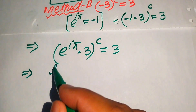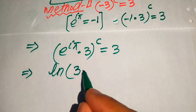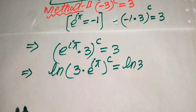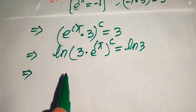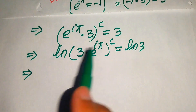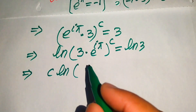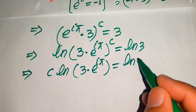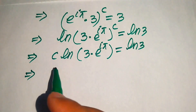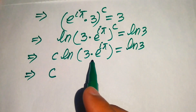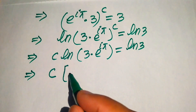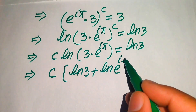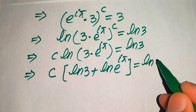Applying the natural logarithm, we write: log((3 · e^(iπ))^c) = log(3). Moving the exponent c to the front gives c · log(3 · e^(iπ)) = log(3). We then apply the product rule of logarithms to expand the left side: c · (log(3) + log(e^(iπ))) = log(3).